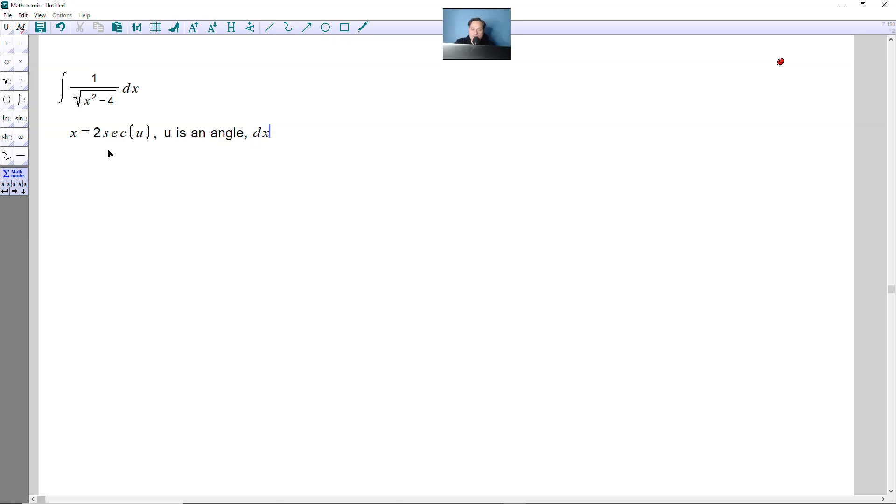you can say that dx would be equal to 2 secant of u, and then here tan of u, and then du, this way.